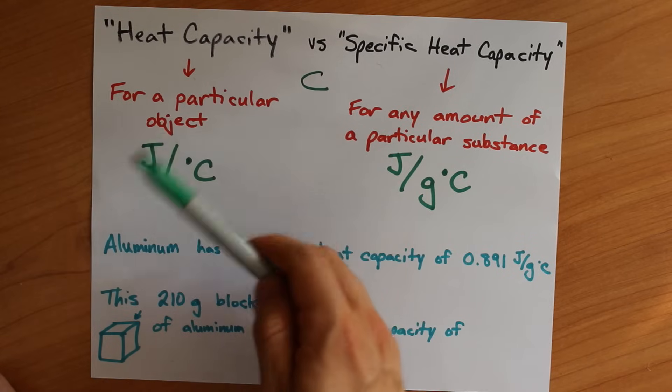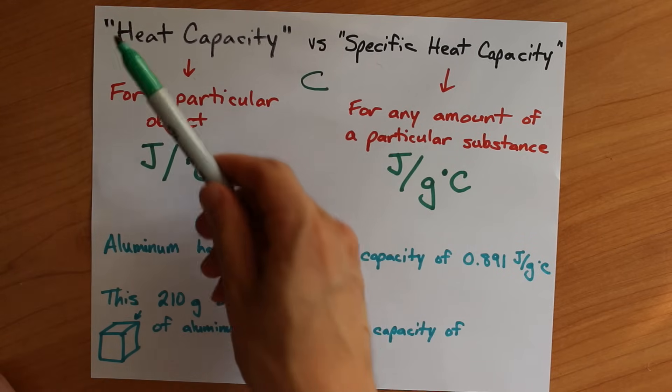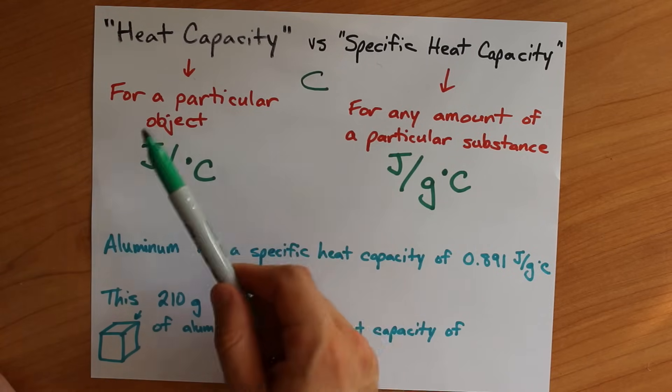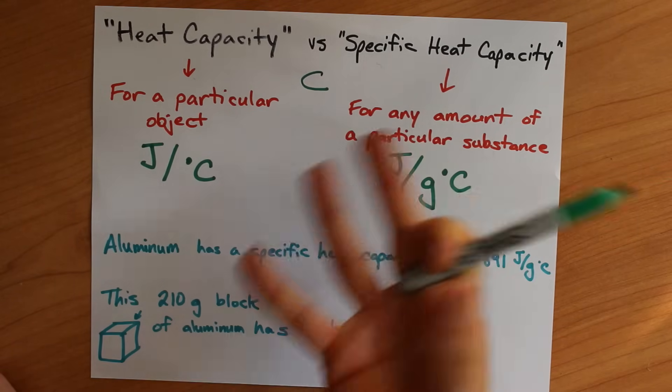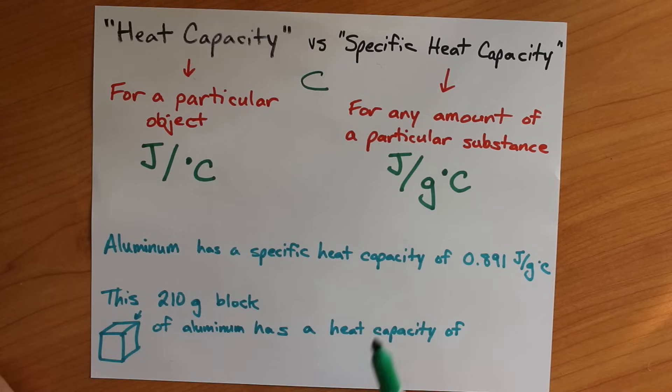But a heat capacity that's non-specific heat capacity is for a particular object, like if you had a quantity of water, 500,000 grams or something.